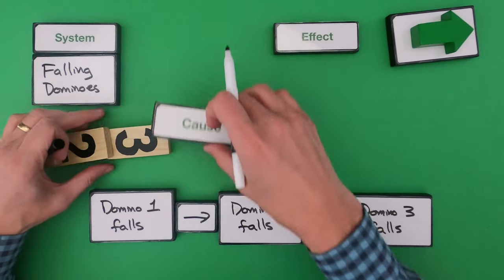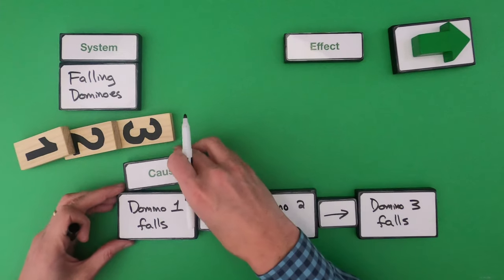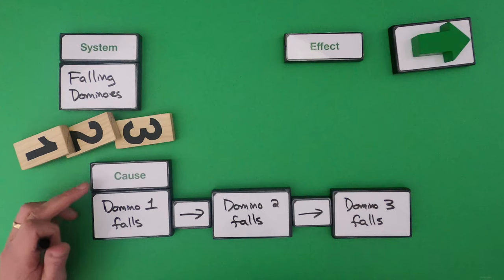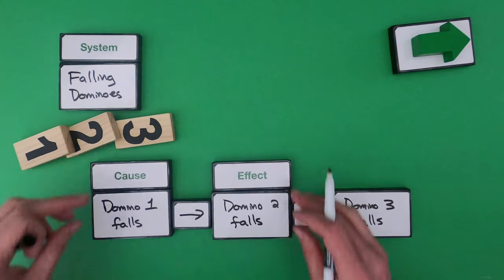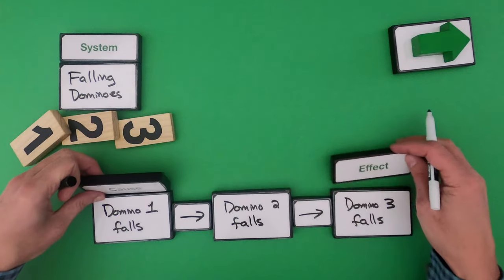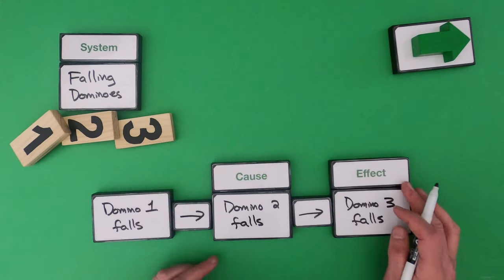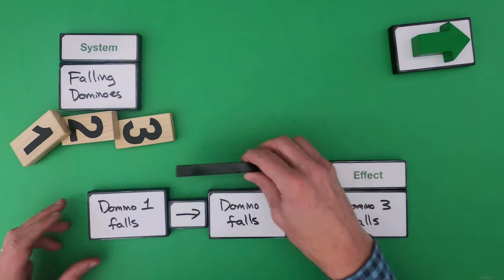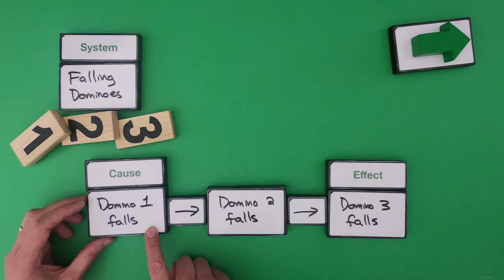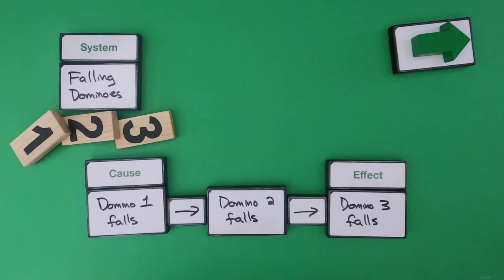And so a way to put that in concepts is I could say domino one falling is my cause. Domino two falling could be an effect. But then domino two falling becomes a cause and that leads to domino three falling which is an effect. Or I could say the initial cause is domino one falling and then domino three is going to be a final effect that's going to happen. And so those are just two simple examples.